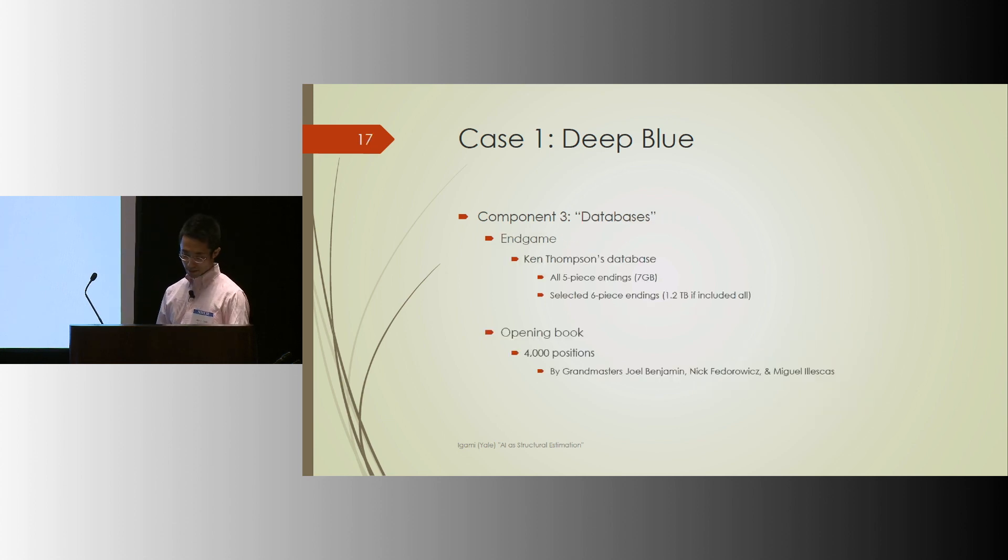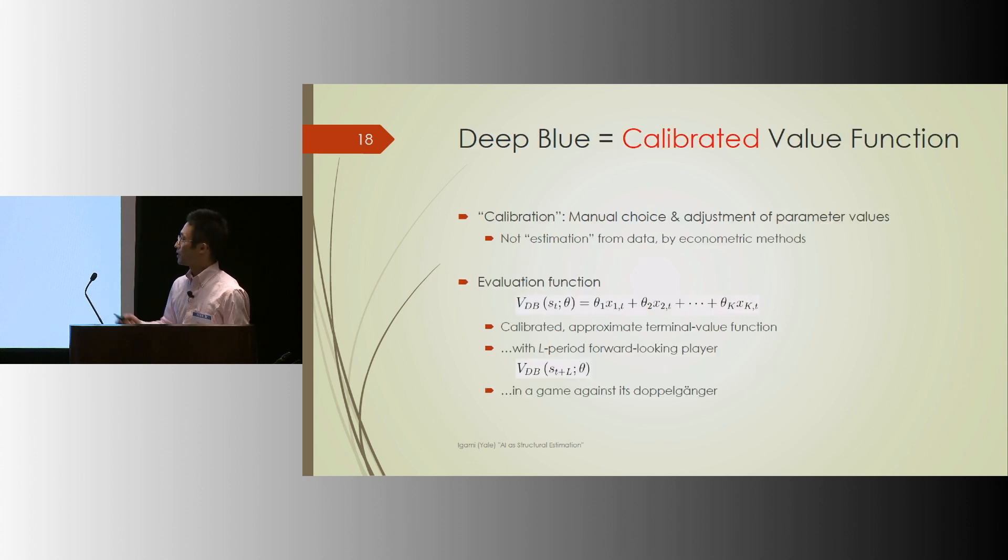The third component is databases for endgame, which compiles the exact solution at the end of the game, and opening book, which is a collection of expert knowledge about what's supposed to be good opening strategies. So by now it should be clear that Deep Blue is a calibrated value function. I mean, the manual choice of parameters, not based on data or econometrics. So to be precise, Deep Blue is a calibrated approximate terminal value function in the game that the program plays against itself, like doppelganger. So that was Deep Blue 20 years ago.